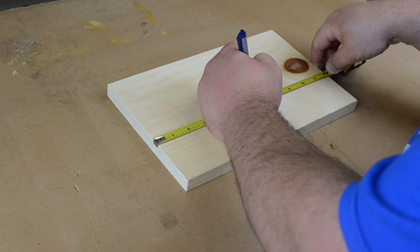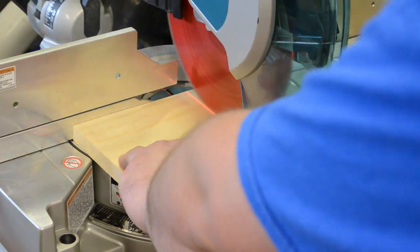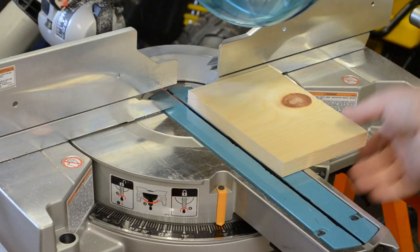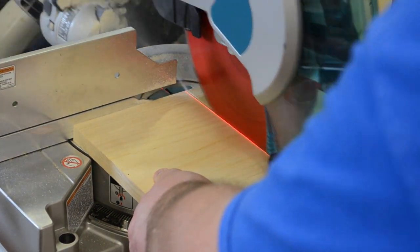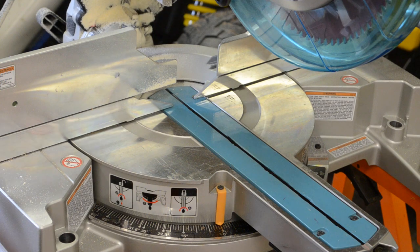I started out with a chunk of scrap pine that I had sitting in my burn barrel. I then cut two pieces four and a half inches by six and a half inches.